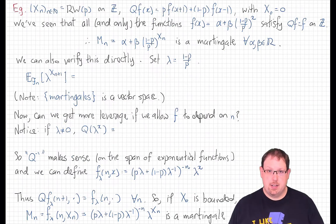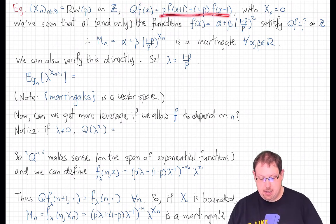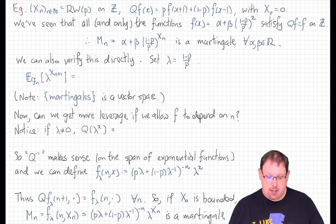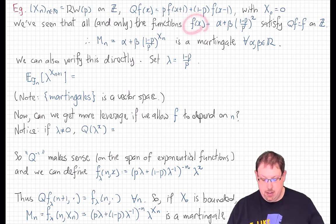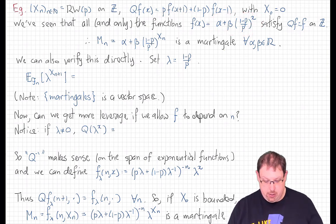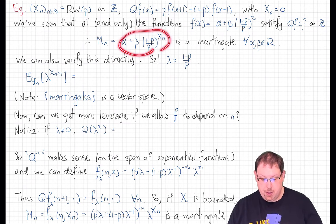Let's look at such an example. Consider the random walk on the integer lattice with drift parameter p. The transition operator q applied to a bounded function has the simple form p times a step to the right plus (1-p) times a step to the left; fix x_0 = 0. If we want our function of the Markov chain to not depend on n, we've already classified all functions f with qf = f — it's a two-parameter family of exponential functions. So for any real parameters alpha and beta, taking one of those exponential functions of x_n gives a martingale.